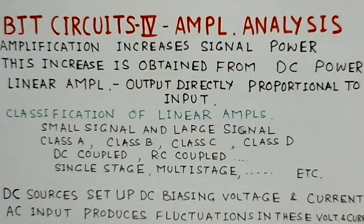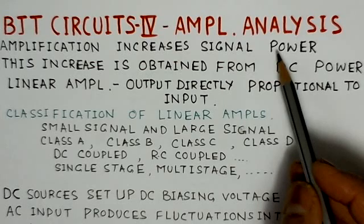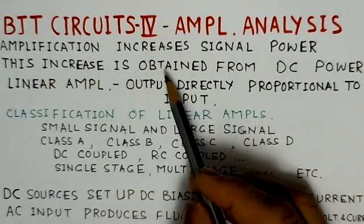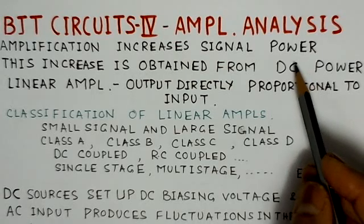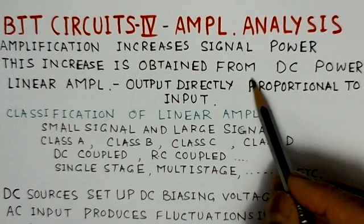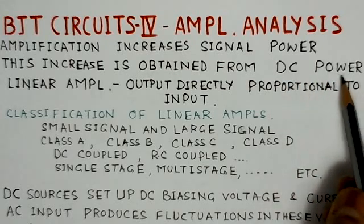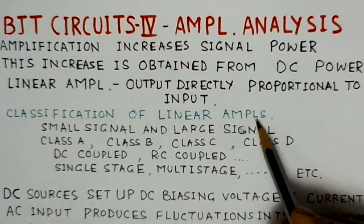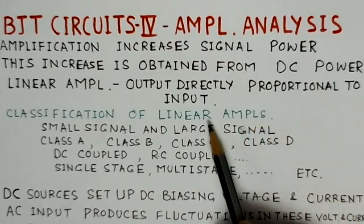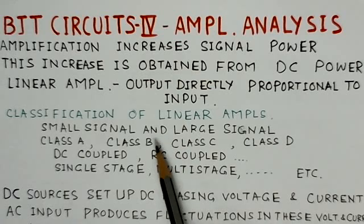We start with BJT circuits Part 4 on amplifier analysis. Amplification basically increases signal power — it can increase signal voltage, signal current, or signal power. This increase is obtained at the cost of DC power; that means DC energy is converted and used in amplifying. Linear amplifiers are those where the output is directly proportional to the input, and most of the amplifiers we will consider here are in the category of linear amplifiers.